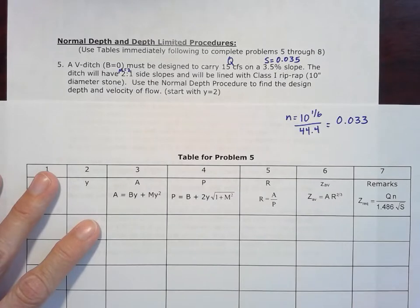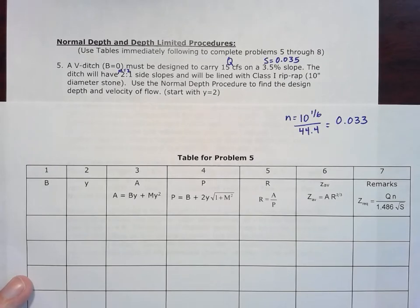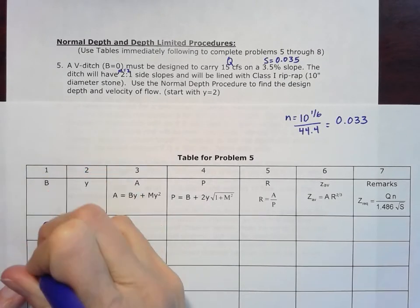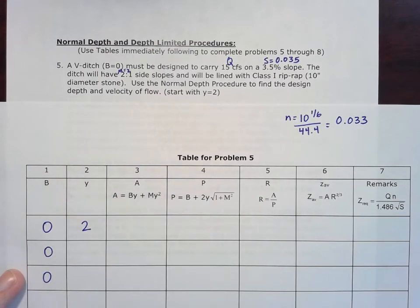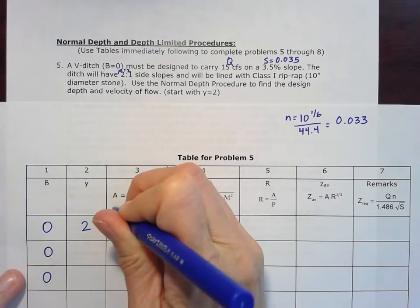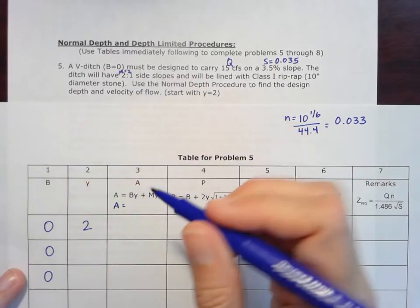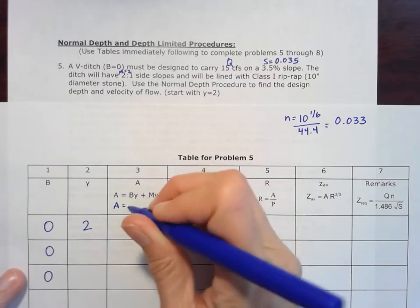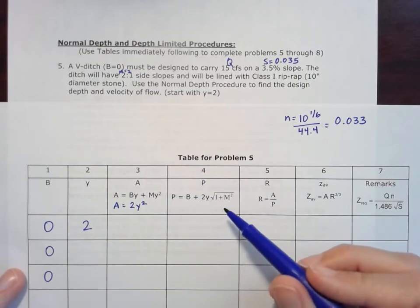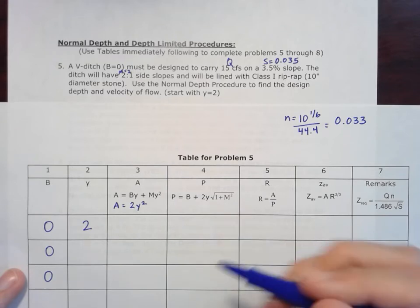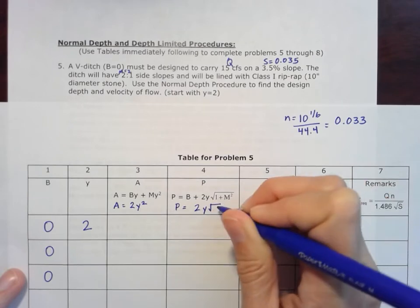We'll use the normal depth procedure here to find the design depth and velocity of flow. We'll start with y equals 2. We know all the way down that our B is going to be 0. Because we know B equals 0, we can say that our A is really going to become 0 for this first term. And M, we said M is equal to 2. So our term here becomes area equals 2y squared. Our perimeter, B is equal to 0, and M is equal to 2. So perimeter simplified becomes 2y times the square root of 5.